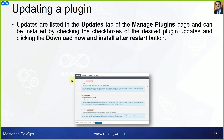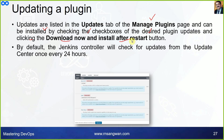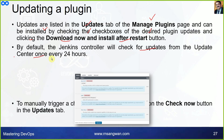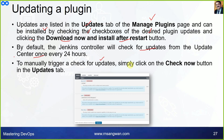Updating a plugin: updates are listed in the Updates tab of Manage Jenkins > Manage Plugins. You can install updates by checking the desired plugins and clicking Download Now and Install After Restart. By default, Jenkins automatically checks for updates every 24 hours and downloads them. To manually trigger a check, simply click the Check Now button in the Updates tab.